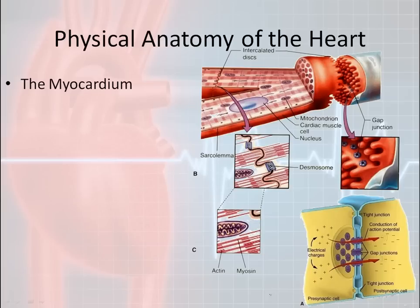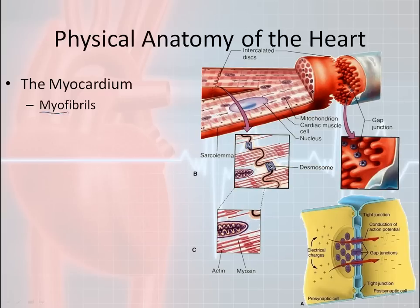Let's move further into the muscle itself and talk about the myocardium. The myocardium is the bulk of the heart tissue responsible for contraction and the thickest part of the heart. The myocardium is made up of millions of what we call myofibrils — breaking down the word: 'myo' means muscle, and 'fibrils' means fibers. So they are essentially little muscle fibers.